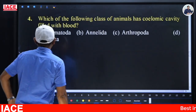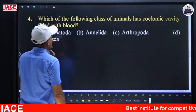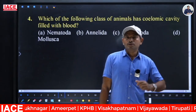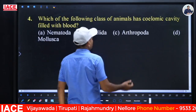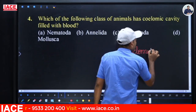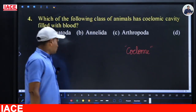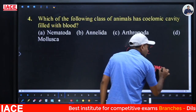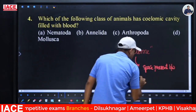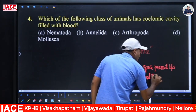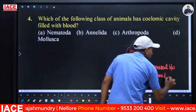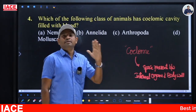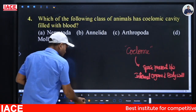Next question: Which class of animals has a coelomic cavity filled with blood? Options: (A) Nematoda, (B) Annelida, (C) Arthropoda, (D) Mollusca. First, a coelom is the space present between the internal organs and the body wall. This cavity between the body wall and internal organs is called the coelom.